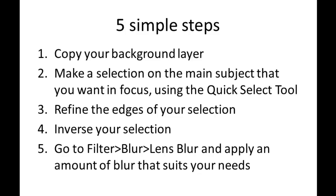Don't worry, we'll go through the steps together in Photoshop. Step number three is to refine the edges of your selection because the problem with the quick select tool is that often the edges aren't the best. Step number four is to inverse your selection, because by now we had selected the subject we want in focus — in this case Johnny Depp — but we want to have the background blurred out, not the subject. So all we have to do is inverse our selection, and our last step is to go to our filter menu and apply the amount of blur that suits our need with the lens blur function.